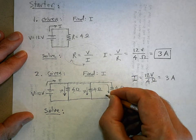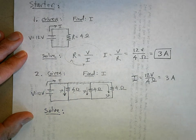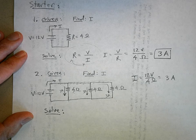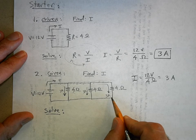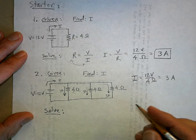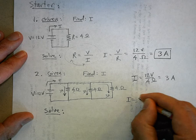How much current does the battery have to pump out if I've got 3 here, 3 here, and 3 here? What's the total current?